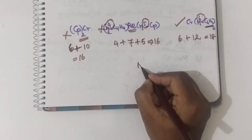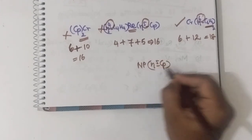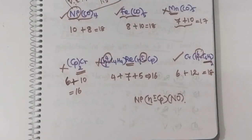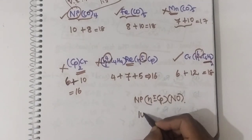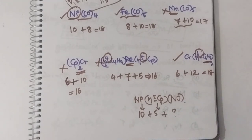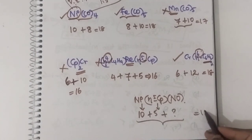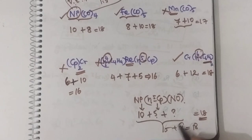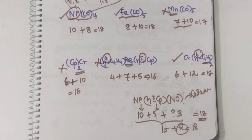Suppose you have nickel with η5-Cp and NO. NO can donate 3 electrons in a linear structure or 1 electron in a bent structure. In this case, nickel has 10 electrons and Cp donates 5 electrons. To decide whether NO donates 3 or 1 electron, we use the 18 electron rule: 10 + 5 + X = 18, so X = 3. Therefore NO donates 3 electrons and the structure is linear.